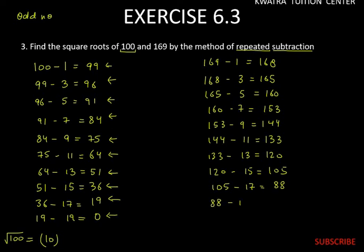88 subtract 19, it will be 69. 69 subtract 21, next odd number is 21, so 48. Now 48 subtract 23, it will be 25. Now 25 and the next odd number, 25 minus 25 equals 0.